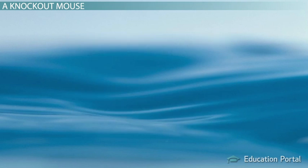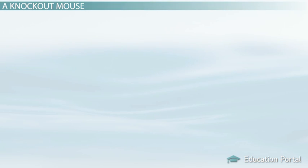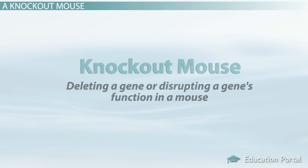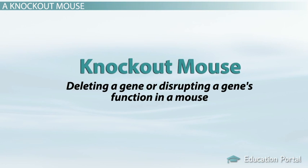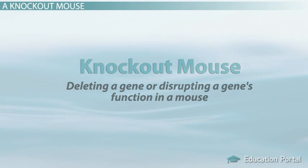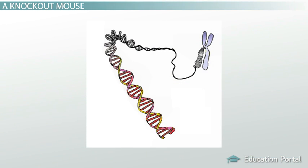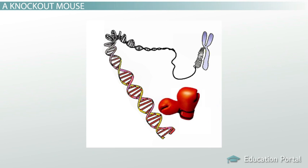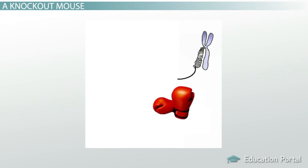Deleting a gene or disrupting a gene's function in a mouse creates what's known as a knockout mouse. We have ways to remove genes in other organisms, but it might be called something totally different. You can remember this term by thinking of it this way: it's like we put on a pair of gloves and punched a hole in the mouse genome, effectively knocking out that gene's function.